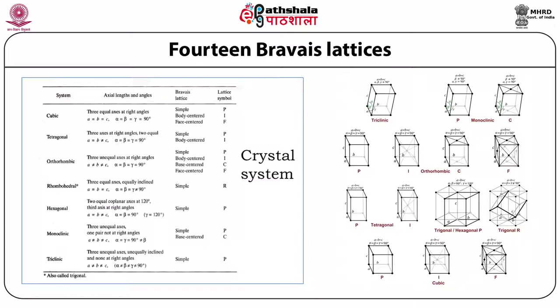These are the seven crystal systems. Whatever the molecule size — small or macromolecule — the crystal system always belongs to one of only seven types. Considering lattice types, a unit cell with lattice points only at the eight corners is called a simple or primitive lattice, denoted by capital P.